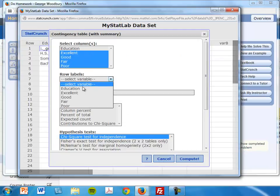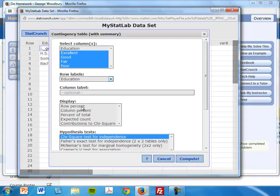Again, numerical data under excellent, good, fair and poor. Row labels under education. And if I click on row percent, that will give me the percent of the total for each row.